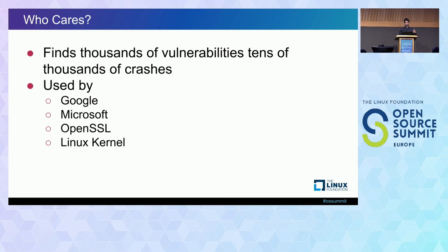We fuzz pretty much every major product that Google has — Android, Chrome, Chrome OS, and the internal code we work on. Many other companies use fuzzing as well. Microsoft actually develops their own fuzzing infrastructure that's similar to ours. The reason it's used so widely is because of how good it is at discovering vulnerabilities. Every year it finds thousands of bugs in software, and many of them are security problems. Fuzzing is a unique way to find bugs by spending compute time rather than developer time.